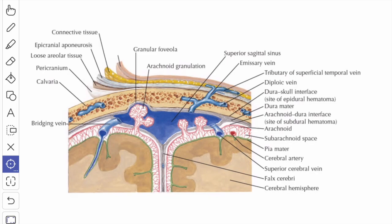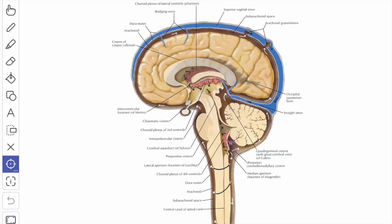The space between the arachnoid mater and the pia mater is known as the subarachnoid space. This space is filled with CSF and is traversed by the blood vessels of the brain. At the base of the brain, the arachnoid space becomes roomy and forms important intercommunicating subarachnoid cisternae. You can see in the sagittal section these spaces filled with CSF, and near the base of the skull the subarachnoid spaces are enlarged to form the cisterns.